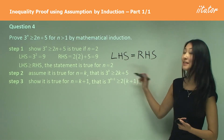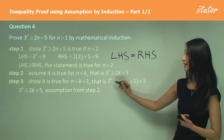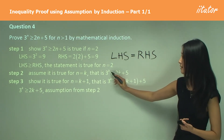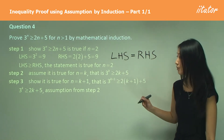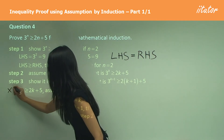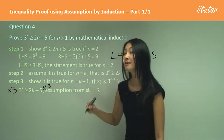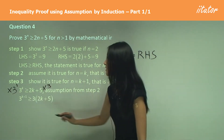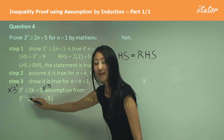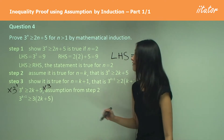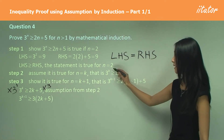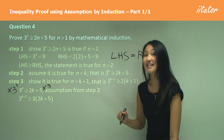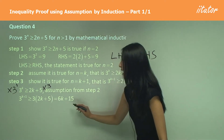Let's start off by using the assumption. Instead of starting with the left hand side, we use the assumption first. To make it look like the k plus 1 expression, we multiply both sides by 3. The left side becomes 3 to the power of k plus 1, and the right side becomes 3 times (2k plus 5), which expands to 6k plus 15.